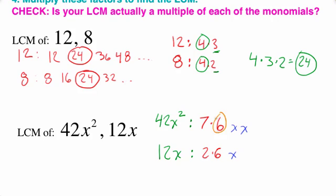And then we're going to circle the ones that are in common. So we have a 6 that appears on both lists. I'm going to write it down. We also have an x that appears on both lists. So 6x appears on both lists.